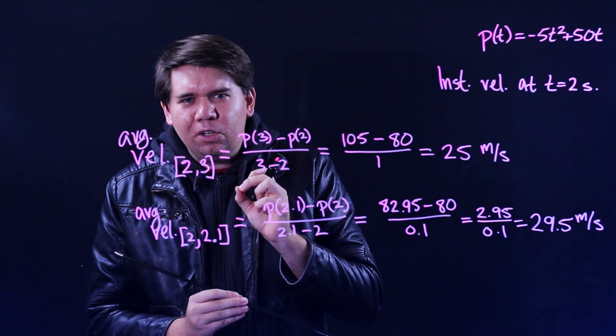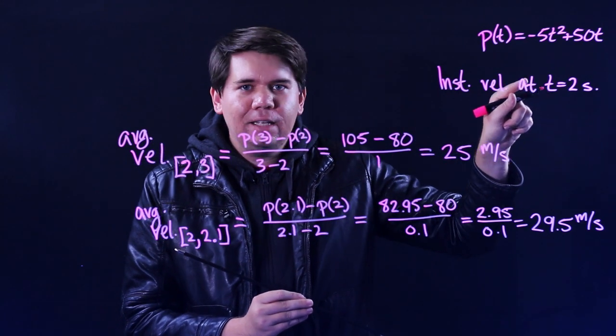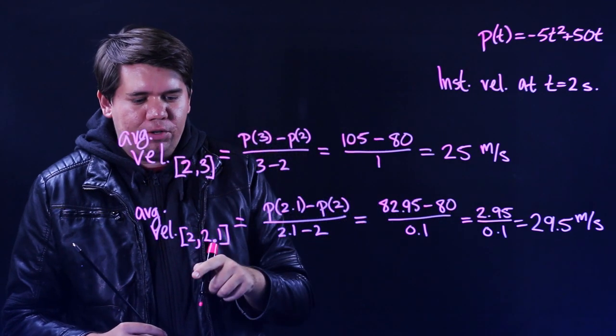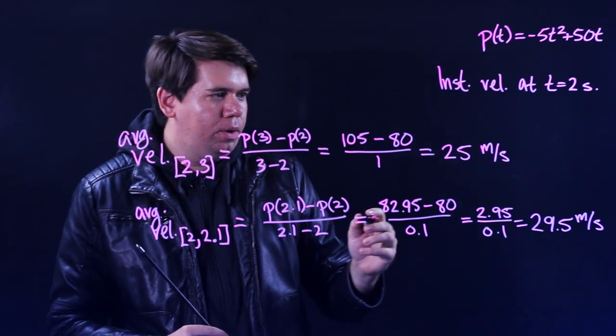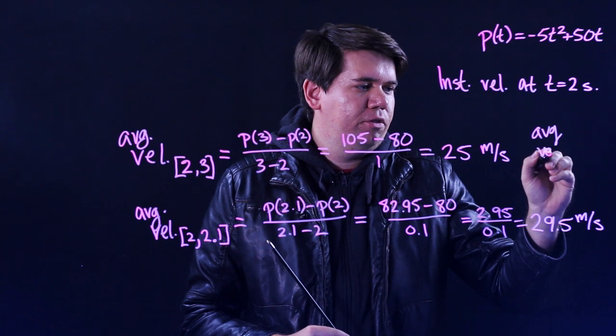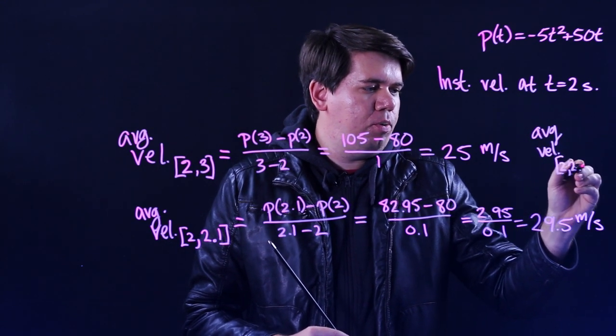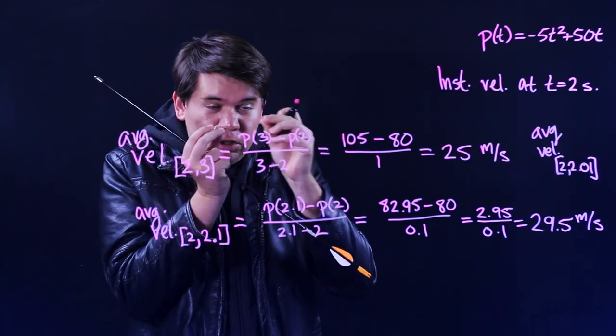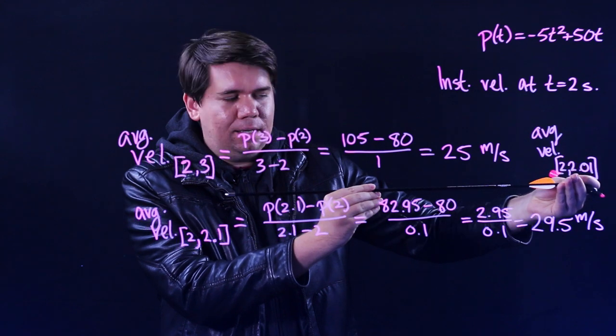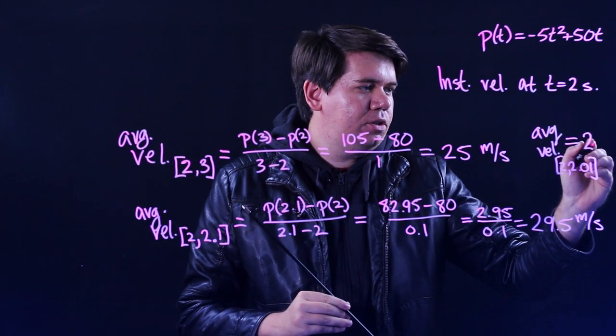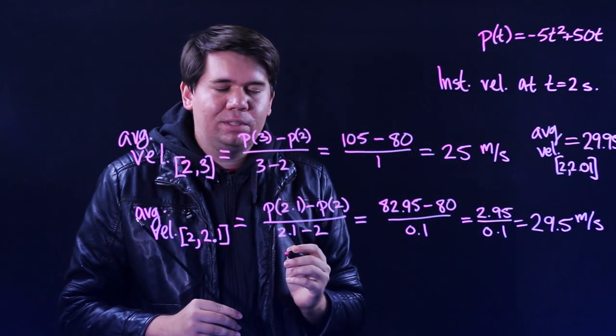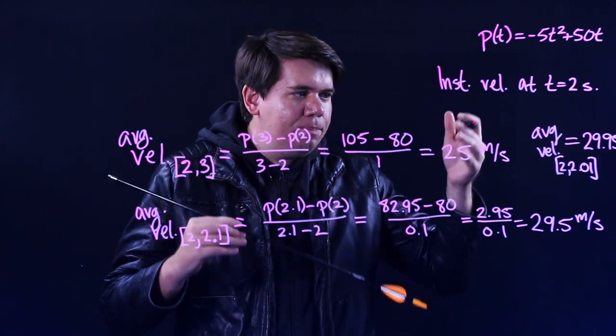But that still isn't quite telling you what is the instantaneous velocity at exactly 2 seconds. So what could you do? Well, you could keep zooming in even further. Maybe instead of going from 2 to 2.1, someone could come along and say calculate the average velocity from, let's say, 2 to 2.01. Even instead of a tenth of a second, we only let the story run for a hundredth of a second. And if you calculate that out, you would get 29.95 meters per second. You could keep going.